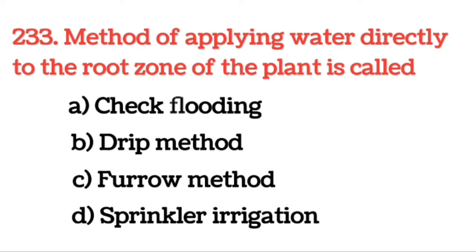Next question: The method of applying water directly to the root zone of a plant is called? Answer: Drip method. उस method को drip method कहा जाता है जिसमें water को root zone में directly provide किया जाता है।